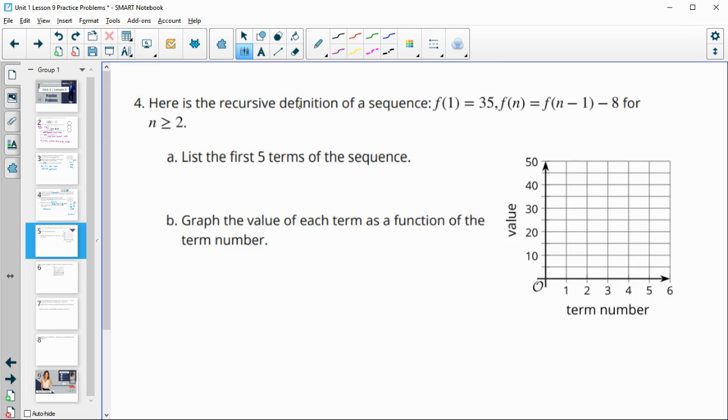Number four, here's a recursive formula for the definition of a sequence. So our first term is 35, and then we have this sequence where the previous term minus 8 lists the first five terms. So we have 35, and then we'll subtract 8 from that, which is 27, subtract 8, which is 19, subtract 8, which is 11, and subtract 8, which is 3.